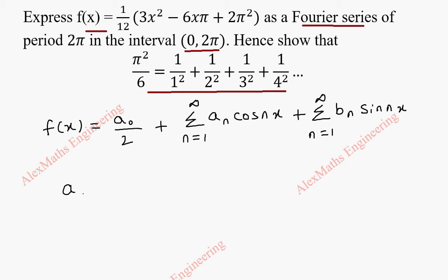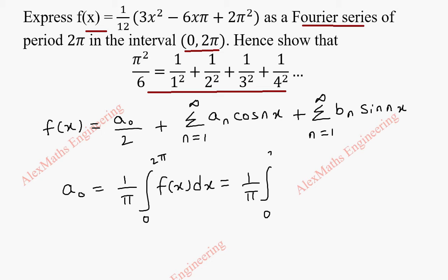Now a0 is 1 by pi integral from 0 to 2 pi of f of x dx. We substitute f of x, which is 1 by 12 times 3x squared minus 6x pi plus 2 pi squared, dx.